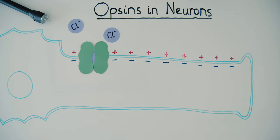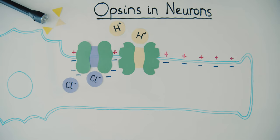Opsins can also be used to make the neuron more negative by bringing chloride ions in or sending positive ions like protons out. This blocks action potentials and inhibits firing.